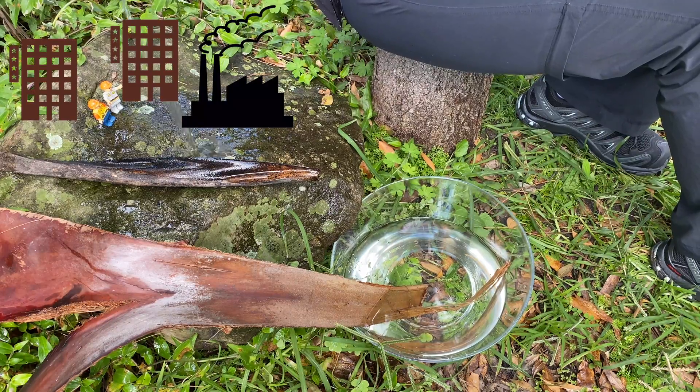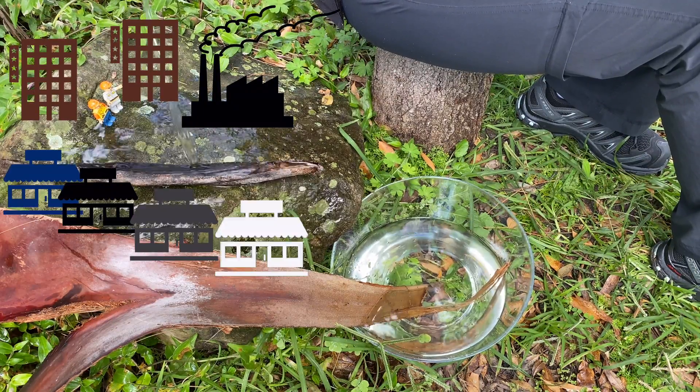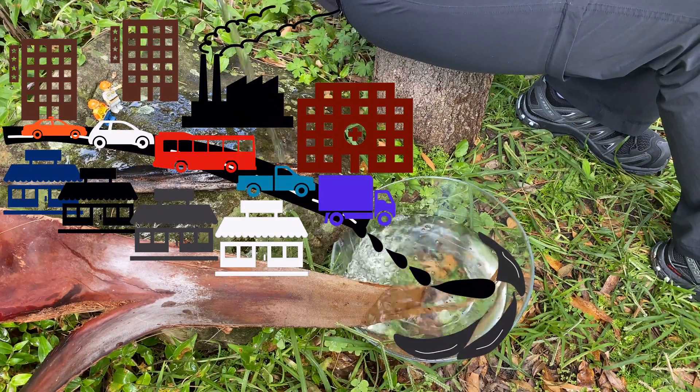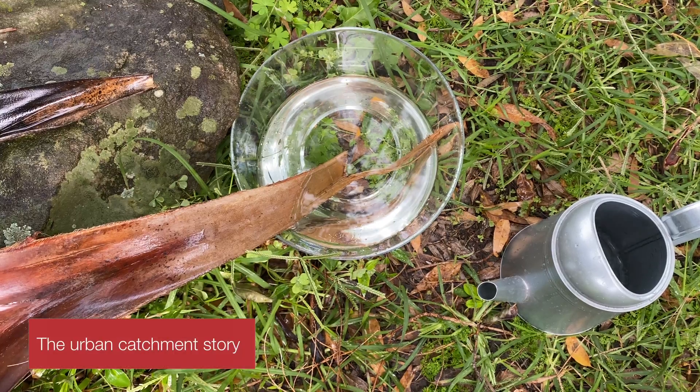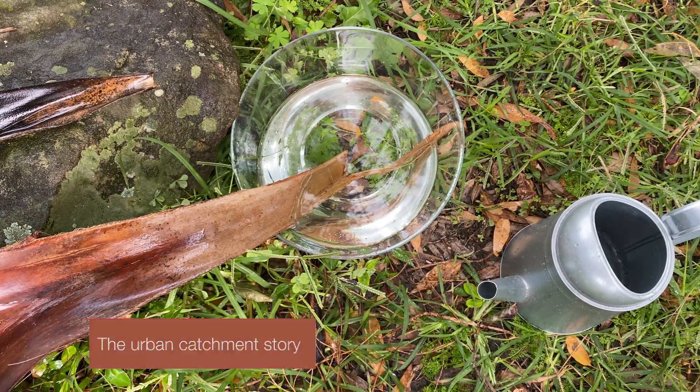In urban areas, rain flows along our streets and into stormwater drains, taking with it any rubbish, leaves, oils and grease that may be found in an urban landscape. Listen now to the story of an urban catchment.